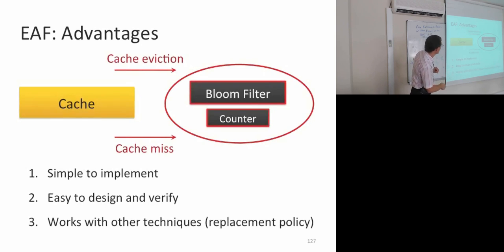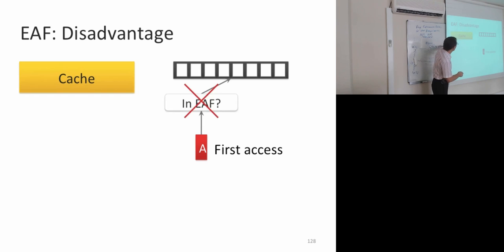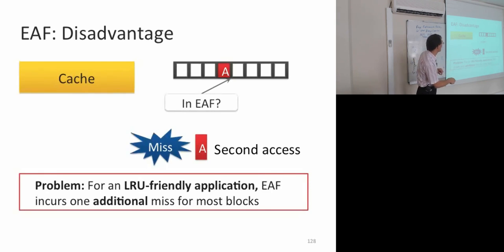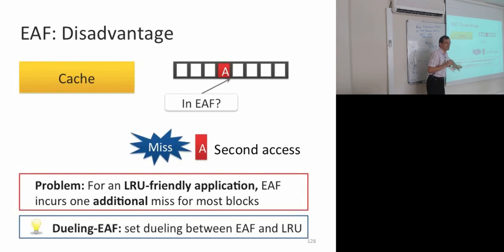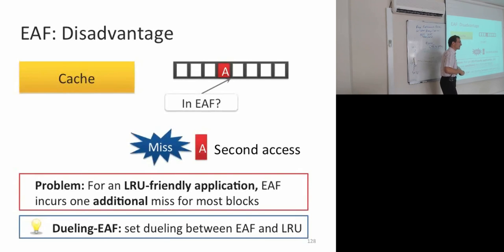One advantage is EAF is simple to implement — we don't change the cache structure, assuming you already have a mechanism to insert at different positions. We operate independently on the side. Unlike MLPA-aware cache replacement which changed the tag store, this is easy to design and verify. It works well with other replacement policy techniques. One disadvantage is that for LRU-friendly applications, the first access gets a cache miss and inserts with low priority, so the second access also misses — incurring additional misses. You can reduce this with set sampling or dueling between EAF-based and LRU policies.